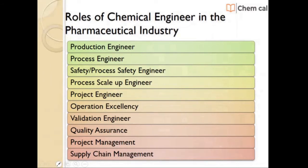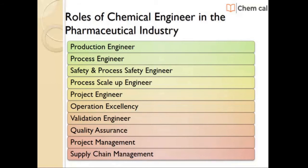That is the reason people call a chemical engineer a universal engineer. Out of all the departments, the top five are very important for chemical engineering calculations. We'll discuss all basic chemical engineering calculations in depth in the incoming videos. Now we'll focus on the roles and responsibilities of a chemical engineer in various departments.